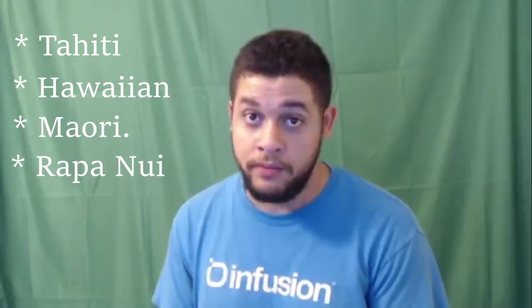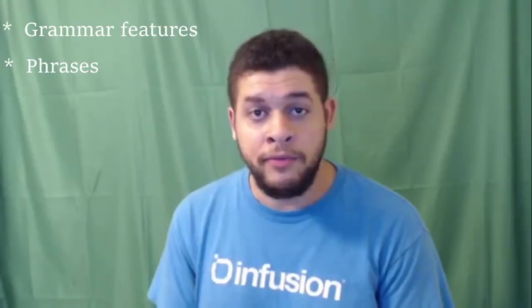Today we're going to be talking about the Tahitian language, which is obviously native to Tahiti. It's also very closely related to Hawaiian, Maori, and Rapa Nui, the language of Easter Island. In this video, we're going to be talking about some of the grammar features of this language, along with some phrases, and later in the video, we're going to go over some longer strings of Tahitian, followed by a question of the day. Now let's dive into the video.